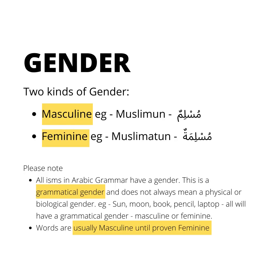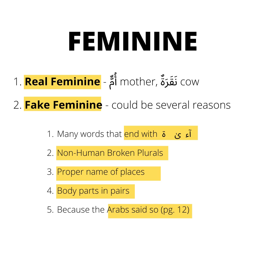There are two kinds of gender: masculine and feminine. Masculine like Muslimun and feminine like Muslimatun. All isms in Arabic grammar have a gender, and this is a grammatical gender, not necessarily a physical gender. Words are usually masculine until they are proven feminine. Feminine could be real feminine like Ummun or Baqaratun, or fake feminine for many reasons: if the word is ending with a Tamar Buta, Aleph Maqsura, or Aleph Mamdooda; non-human broken plurals; proper names of places; body parts that are in pairs; or feminine because the Arabs said so.